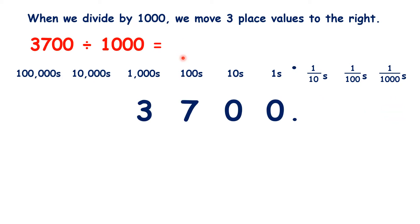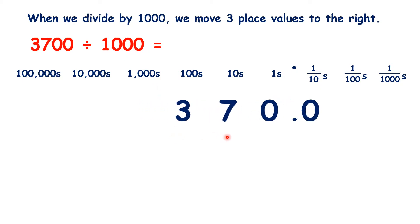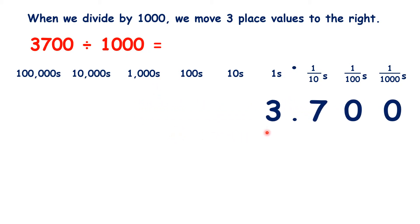Now what about 3,700 divided by 1,000? We move the digits three places to the right, and we get 3.700.